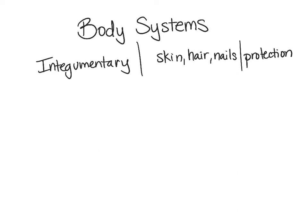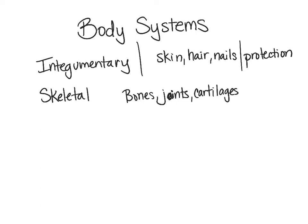The next system is the skeletal system. Our skeletal system is made up of our bones, our joints, and cartilages. It's used for strength and support — to stand up, to help us move things, and it serves as an attachment spot for our muscles, providing leverage to allow us to move our bodies. It also gives our body shape.